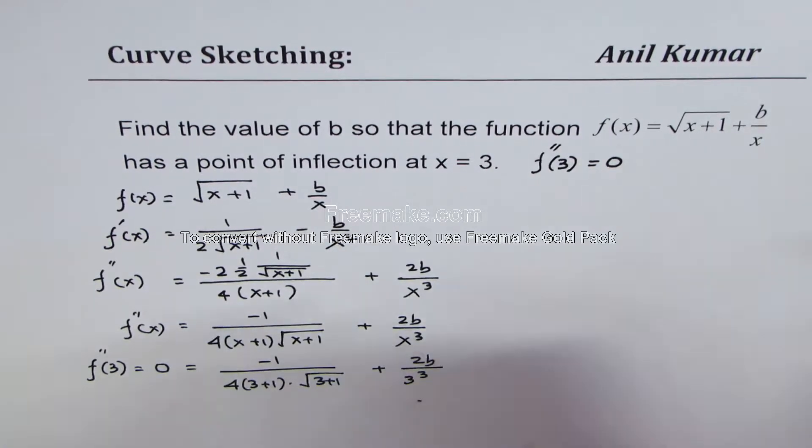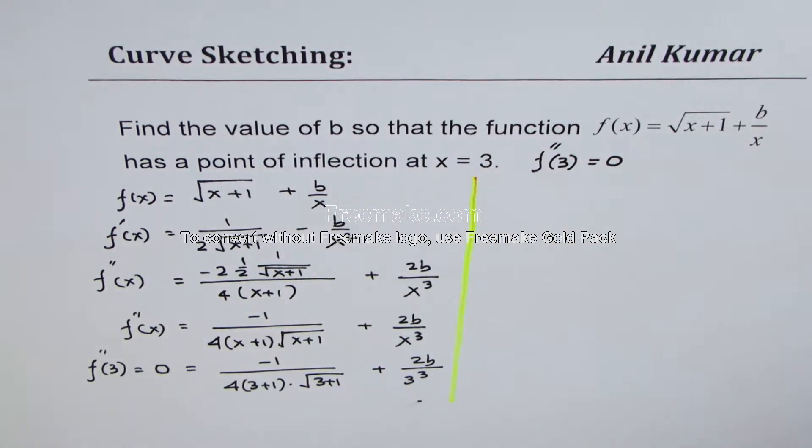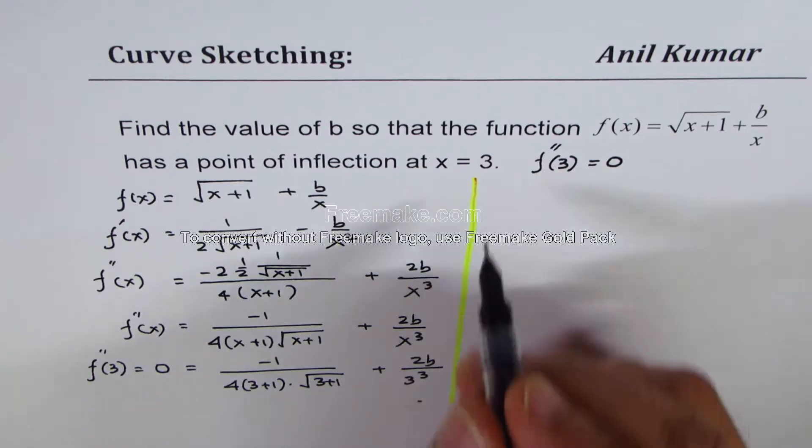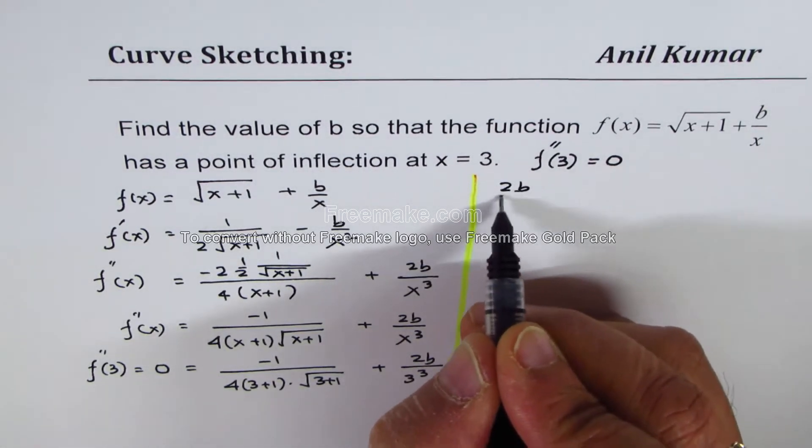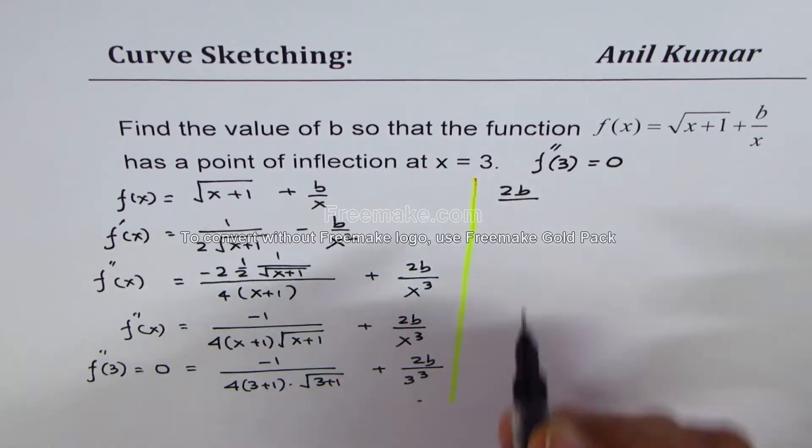In this equation we have only one unknown, which is b, so we can easily find b. We can write 2b over 27 equals, taking this term to the left side, 1 over...